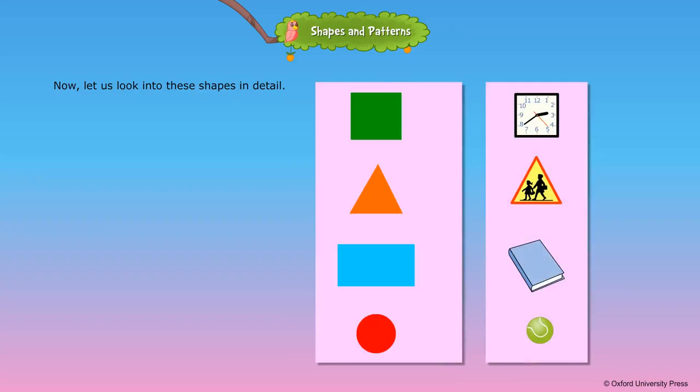Now, let us look into these shapes in detail. Square. It has four sides and four corners. All the sides are of equal length. This clock looks like a square.